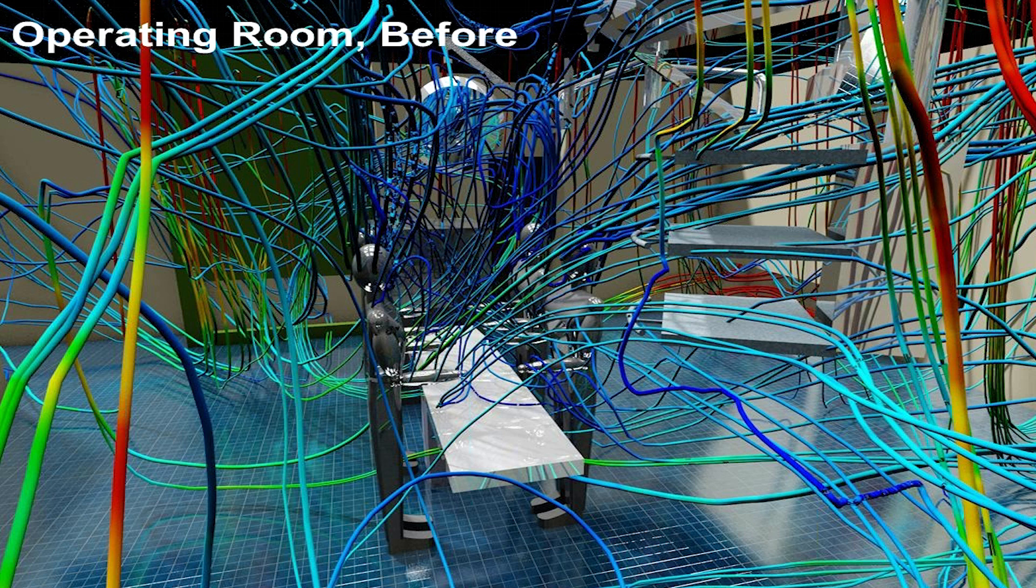We're looking at again tracers that were set up in key points in the room to make sure that we knew where all of the contaminations would go. And before any of the modifications were done you can see it was a mess. So contaminants, particles, they were all over the place. There was no real clear pathway for the exhaust to go.